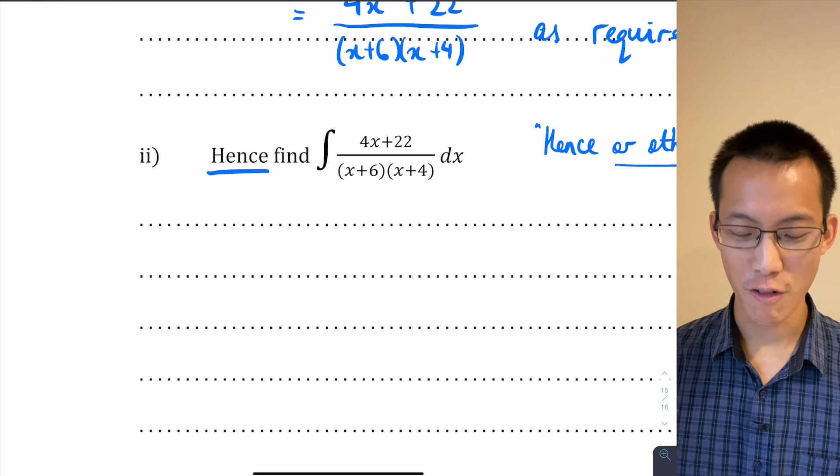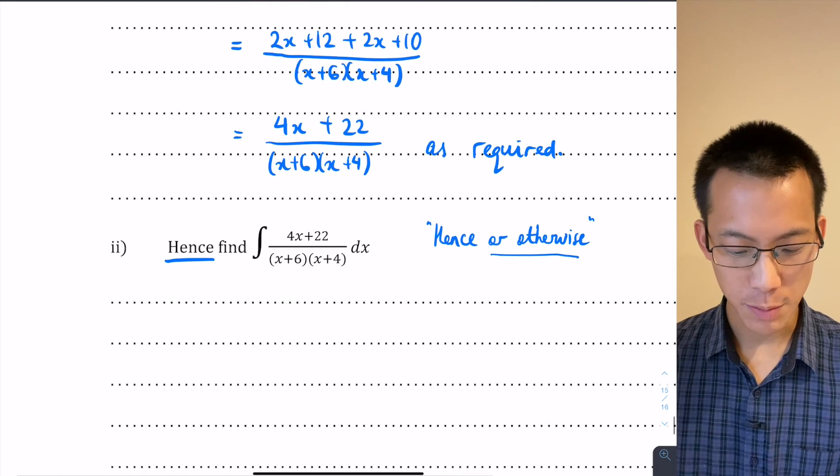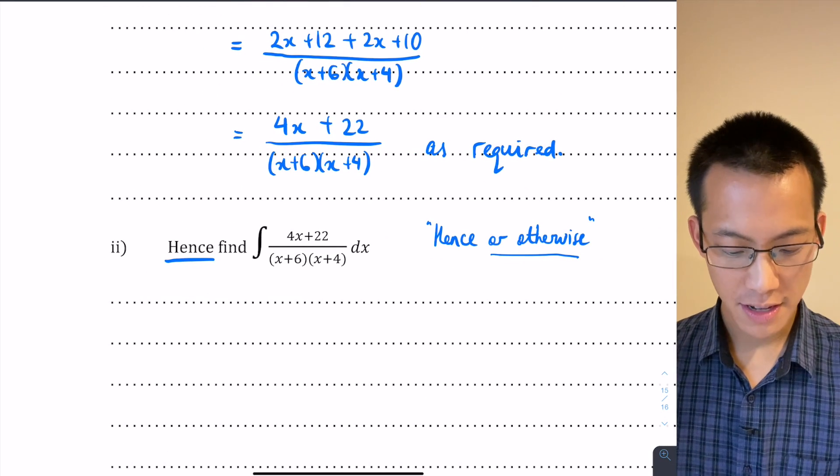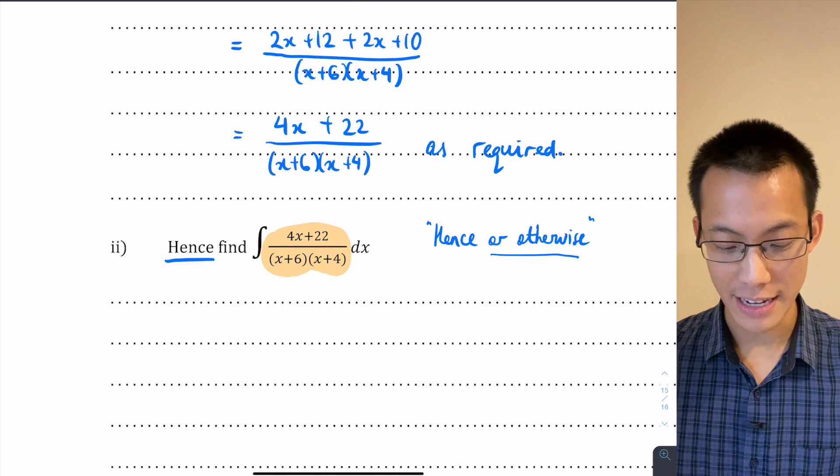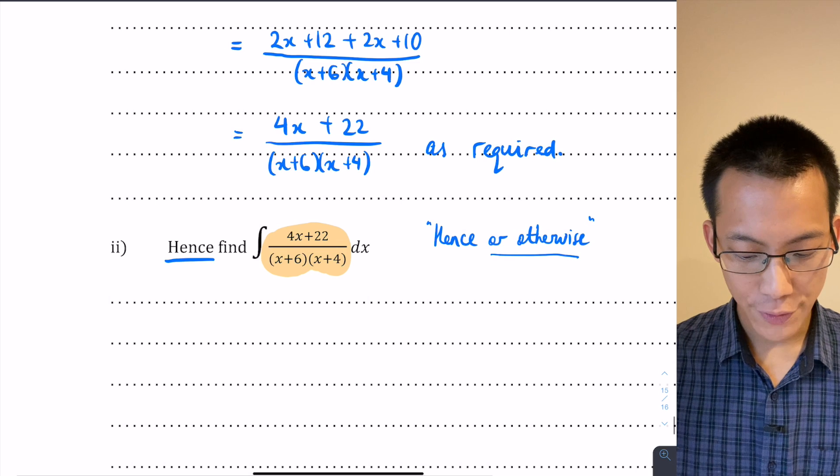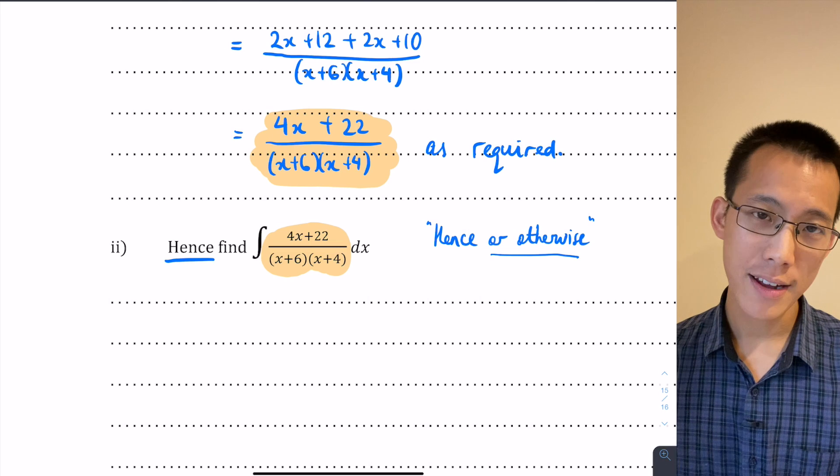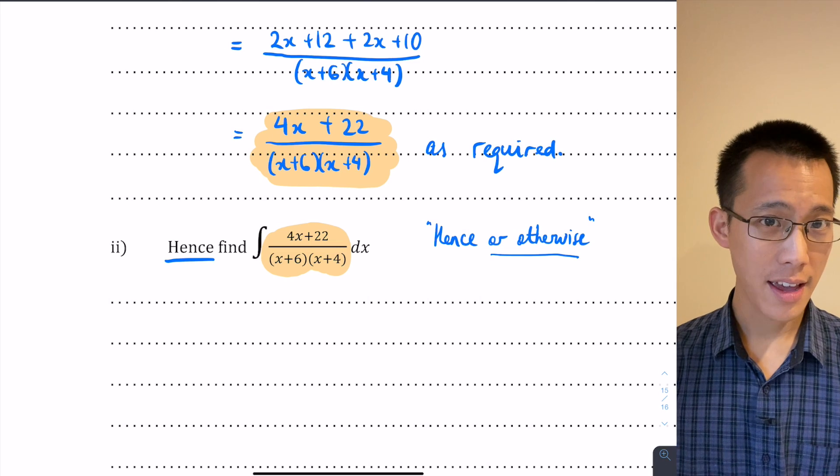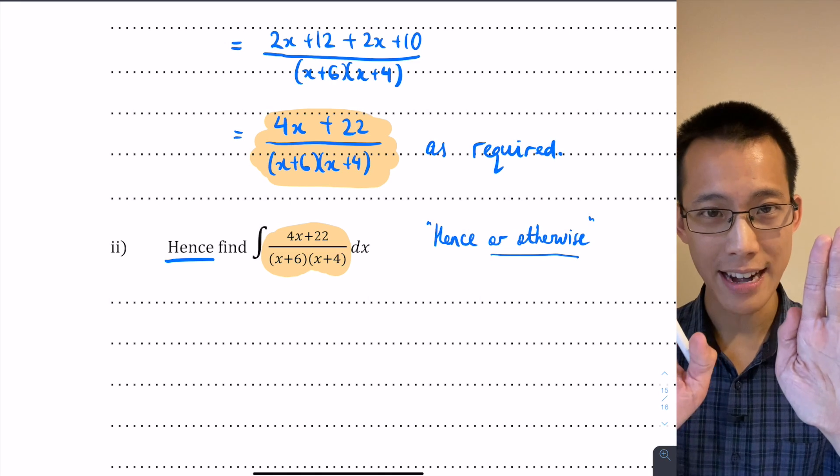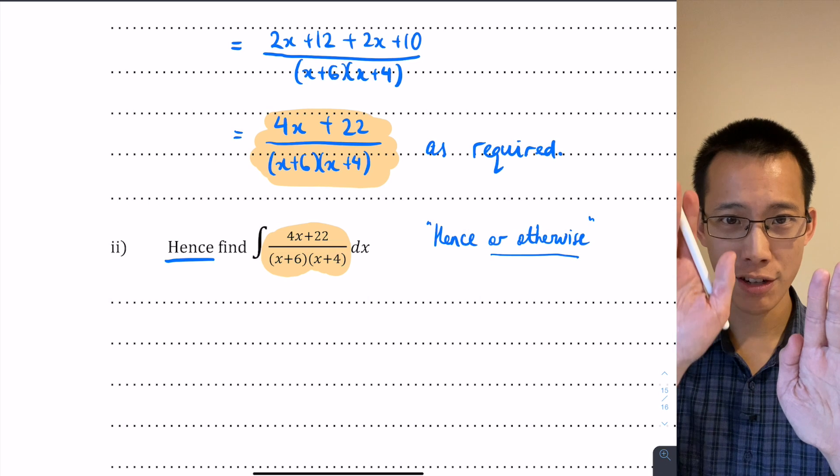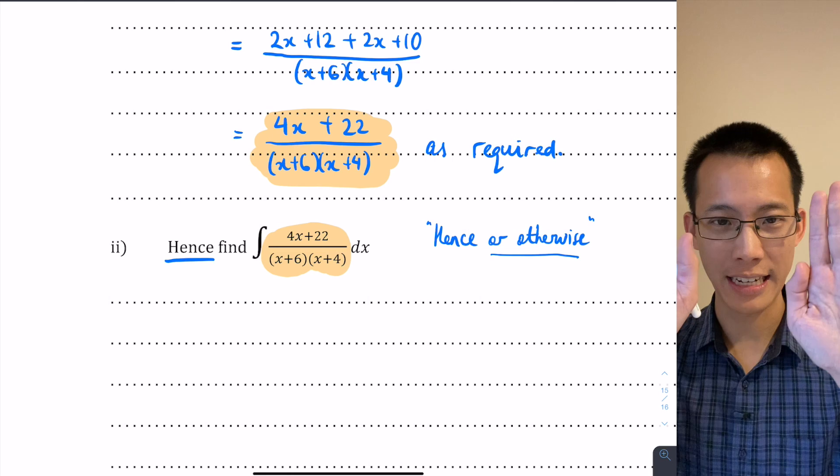Thankfully, this makes it dramatically easier. So how do we use part 1 to solve part 2? The thing that I notice if you look at these two parts together is that 4x + 22 over (x+6)(x+4)—this thing we're being asked to integrate—is equivalent to, or it's exactly identical to, the left-hand side of the equation that we were working with in part 1. So part 2 is asking us to integrate something that appeared in part 1. Now if they're asking us in part 1 to show these two things are equal, and then they say in part 2 "hey, integrate this thing," well that means integrating this is the same as integrating this.